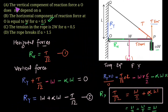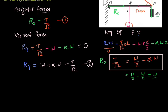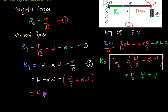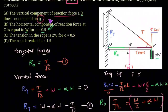Option A states that the vertical component of the reaction at O does not depend on alpha. Substituting T/√2 = W/2 + alpha·W into Equation 2: Ry = W + alpha·W − (W/2 + alpha·W) = W + alpha·W − W/2 − alpha·W = W/2. The alpha·W terms cancel, so Ry = W/2, which is independent of alpha. Option A is also correct.